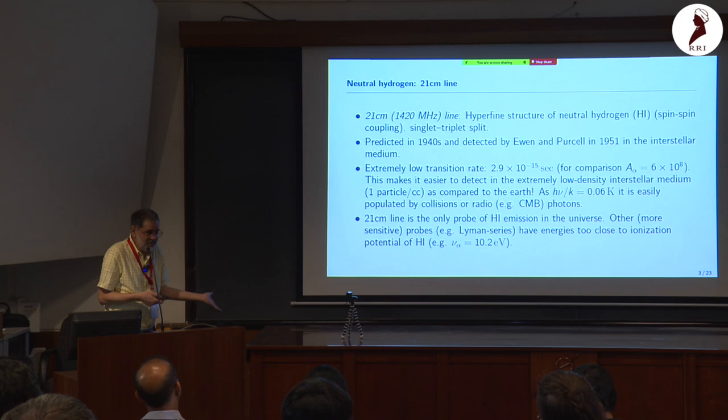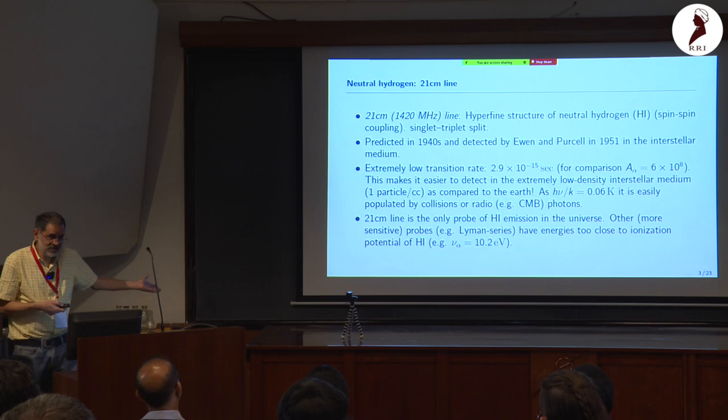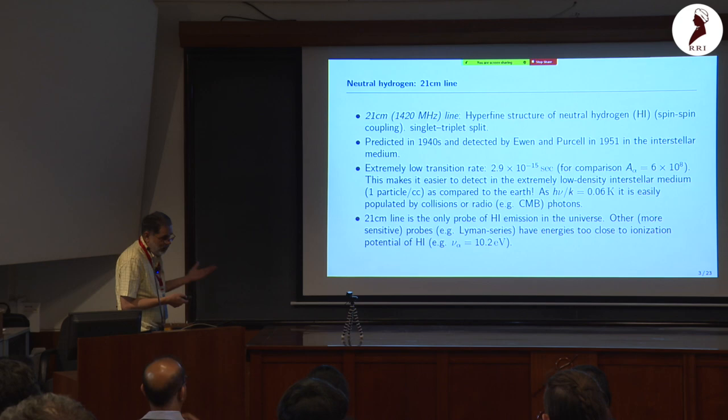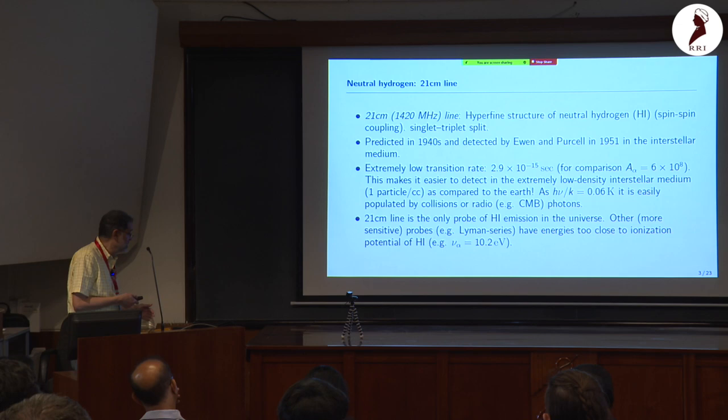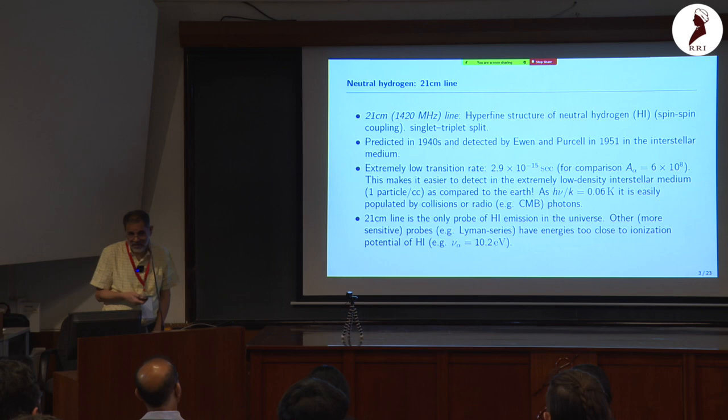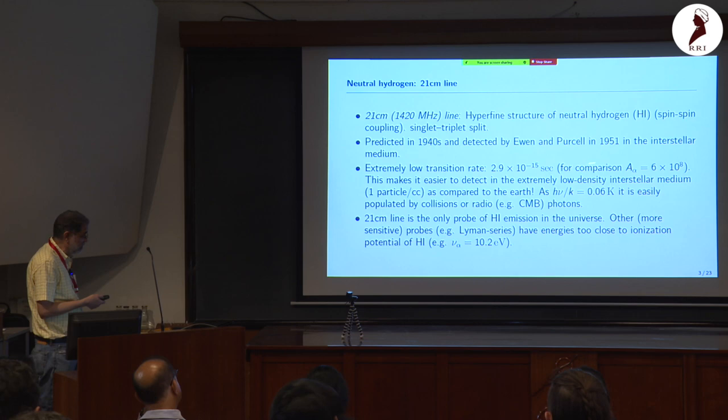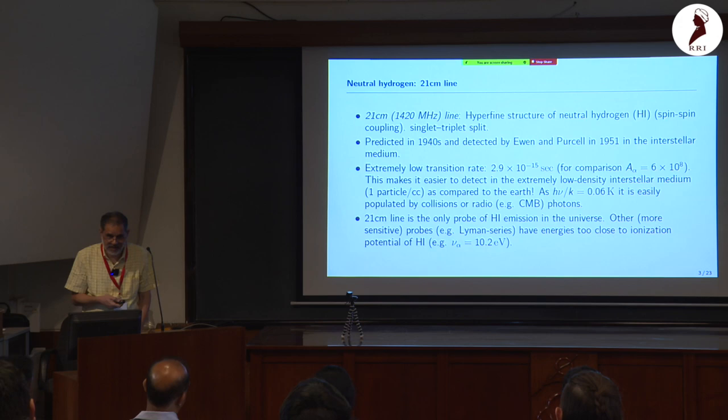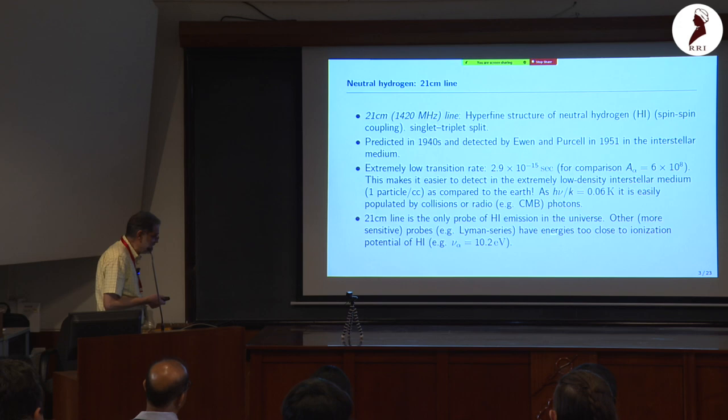The levels are easily populated by collisions, and the 21cm line is the only probe we have of HI emission. One may ask: why not detect HI using regular Lyman-series lines, which have much larger A-coefficients? Those are actually good probes of ionized hydrogen, not neutral hydrogen. If you try to heat the gas to temperatures where those levels get excited — Lyman-alpha requires 10.2 eV — you end up ionizing the gas. So for neutral gas at 100 to 10^4 K, the 21cm line is the way.